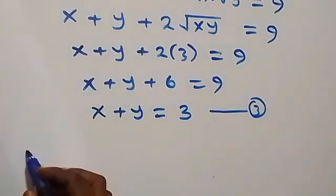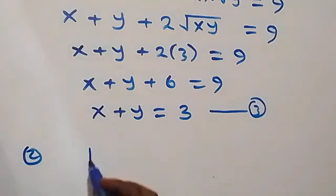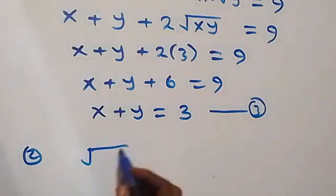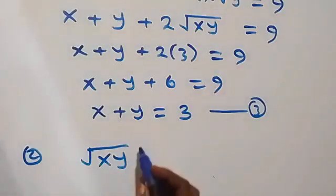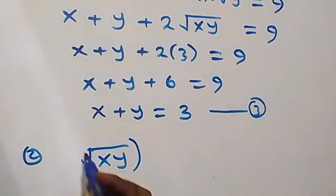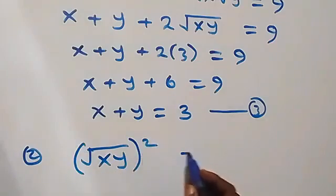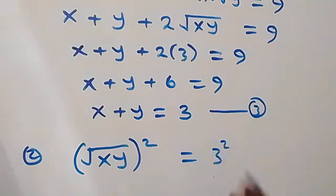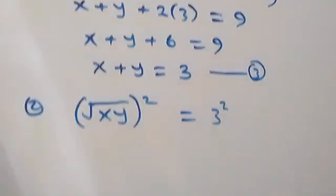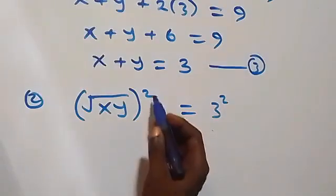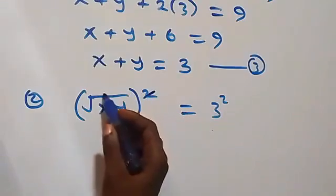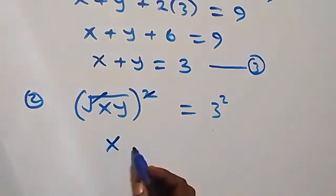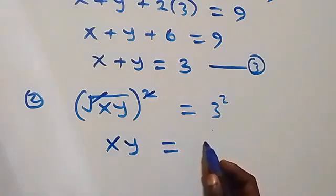From equation two, √(xy) = 3. Squaring both sides gives (√(xy))² = 3², so xy = 9.